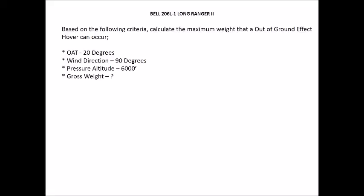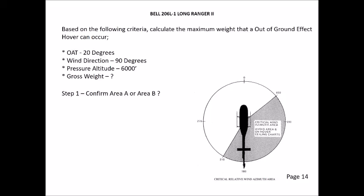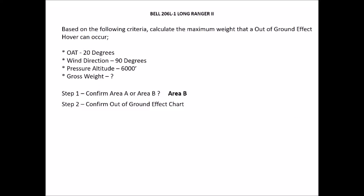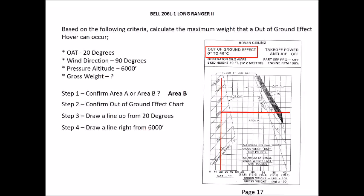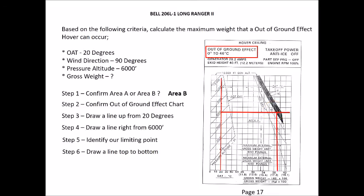One more question: calculate the maximum weight for an out-of-ground effect hover. Outside air temperature 20 degrees, wind direction 90 degrees off the nose, pressure altitude 6,000 feet, gross weight unknown. Step one: confirm area A or area B — go to page 14, identify the wind, and confirm we're working in an area B situation. Step two: confirm the out-of-ground effect chart — make sure you're using the correct chart. Step three: draw a line up from 20 degrees. Step four: draw a line right from 6,000 feet. Step five: identify the limiting point — at the area B mark. Draw a line from top to bottom. Our answer: maximum out-of-ground effect hover weight is 3,950 pounds.